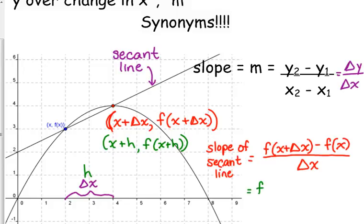So, similar idea, f of x plus h minus f of x over the change in your x values here would then be h. x plus h minus x leaves you with just h. So, you should be familiar with both of those.